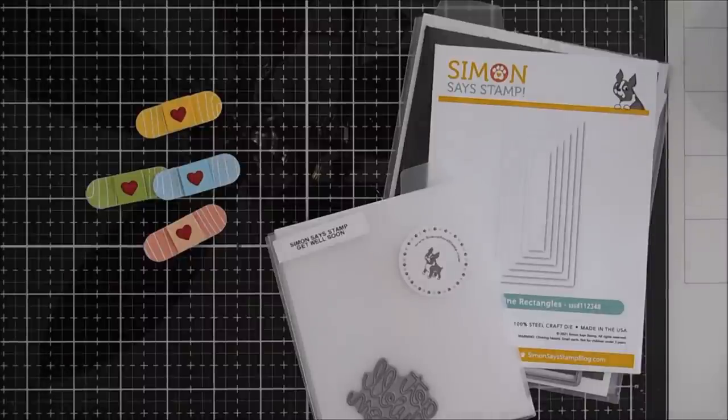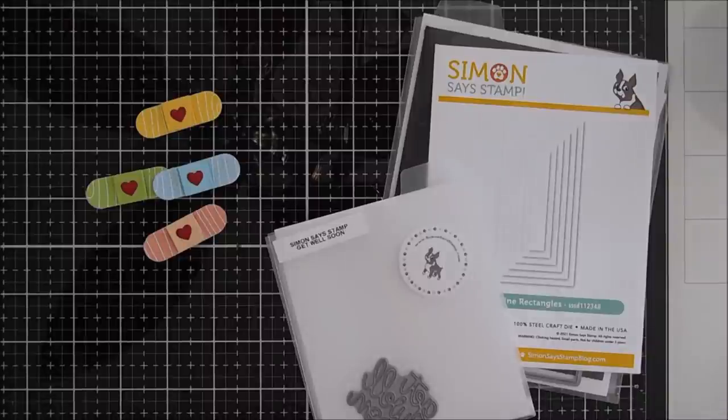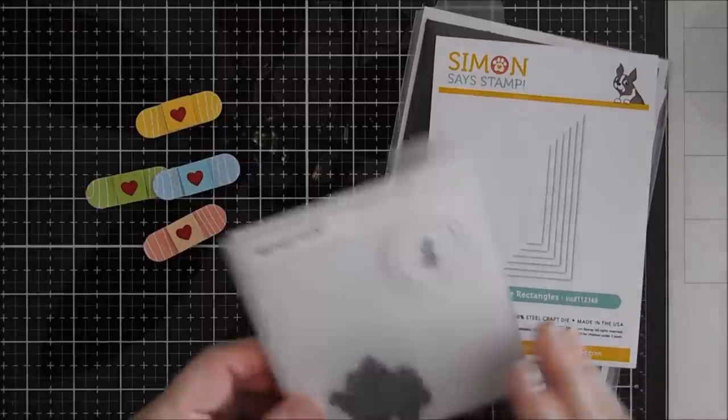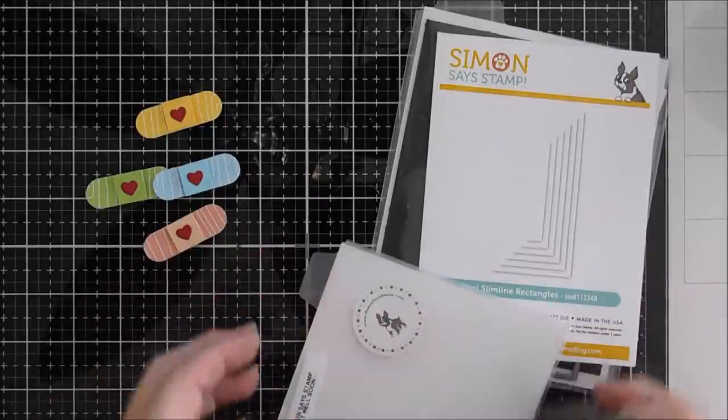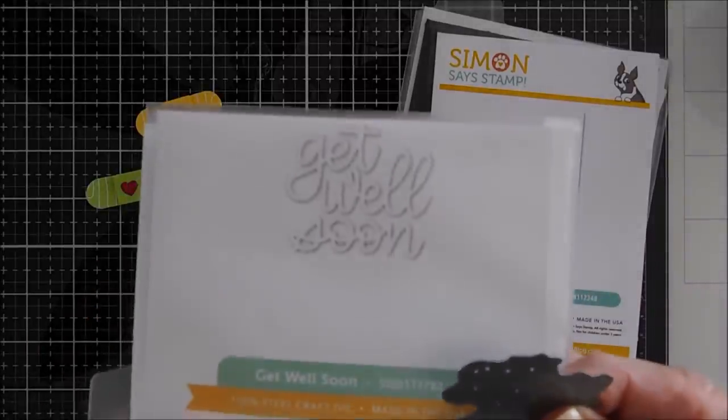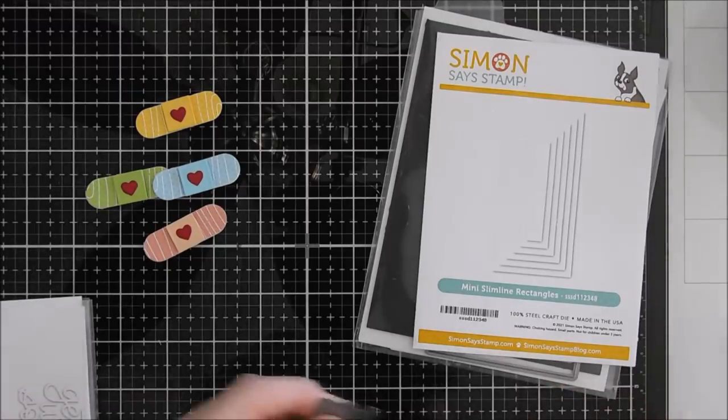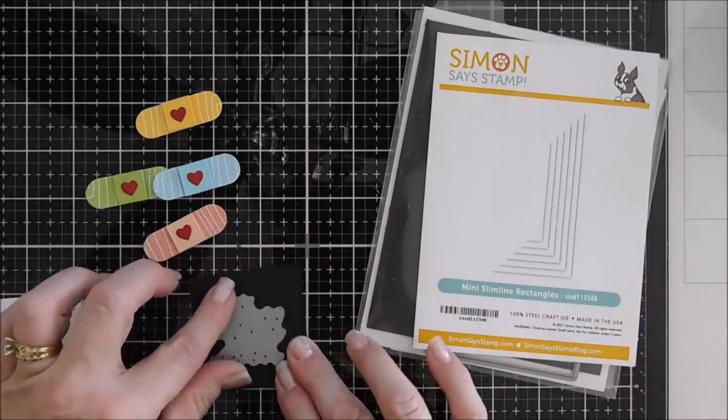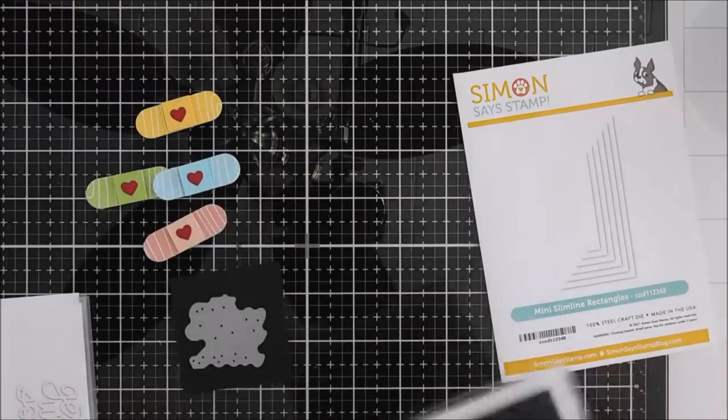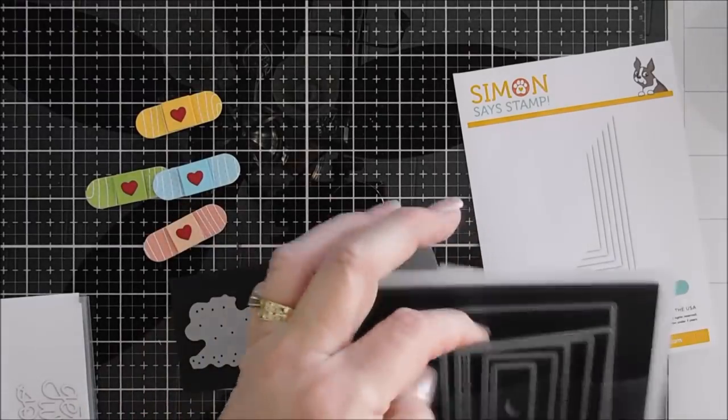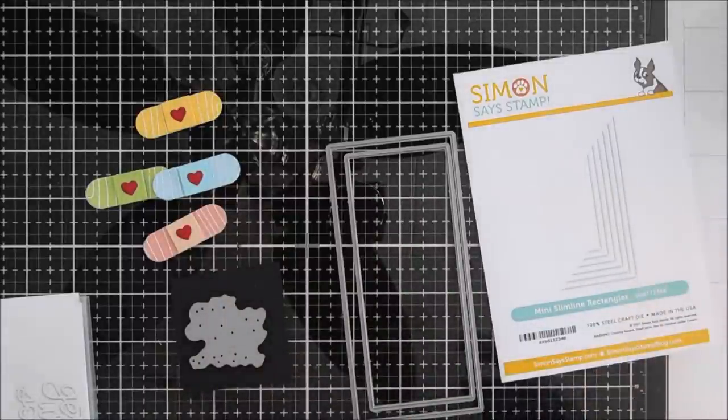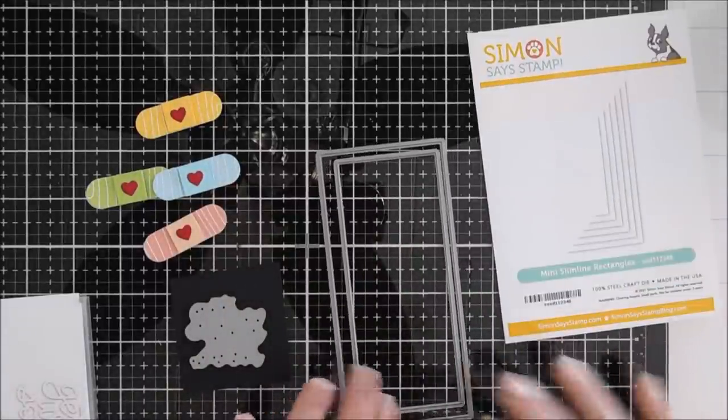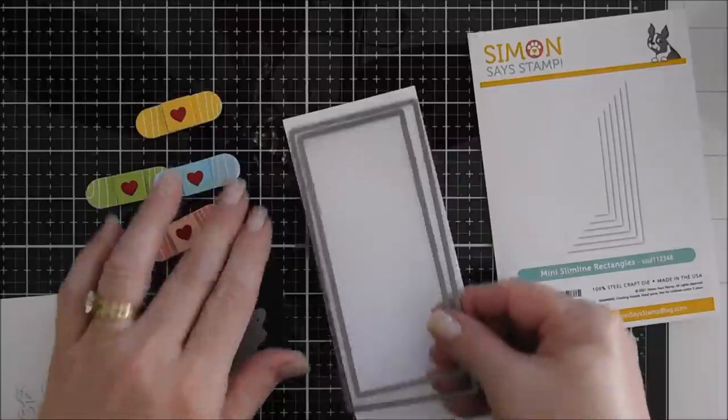I'm going to take my band-aids. We'll set them aside and I have two die sets from Simon. The first one is a Get Well Soon die. If you guys need a good Get Well Soon die this is a real pretty font. It's a nice size and it's less than five dollars at Simon. I'm going to die cut that out with white cardstock and then I'm also going to be using some of the mini slimline rectangle dies. The two second from the largest.